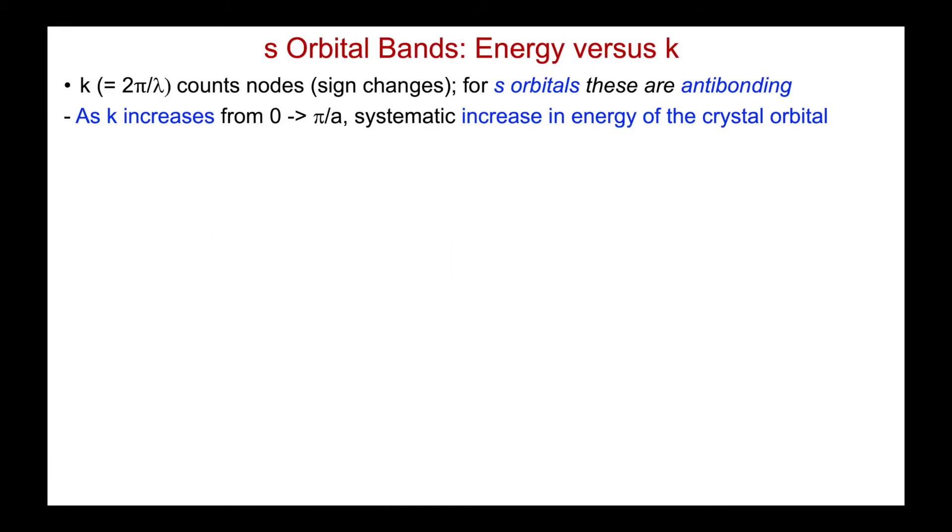In the last video, we saw that the k vector, which is equal to 2π over λ, is an excellent quantitative method for counting the nodes, the number of sign changes in the crystal orbitals. And we saw also that for s orbital overlaps, the nodes correspond to anti-bonding interactions. And as k increases from 0 to π over a, there's a systematic increase in the energy of the crystal orbital. Because for π over a, all of the orbitals are out of phase, and at 0 they're all in phase.